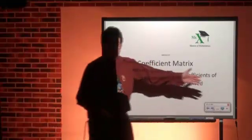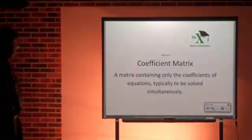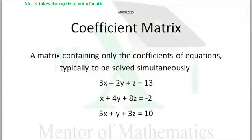Hi, Mr. X with Glossary Term: Coefficient Matrix. It's a matrix we get from the coefficients of the terms in a polynomial, and we use that matrix to solve the equations simultaneously.